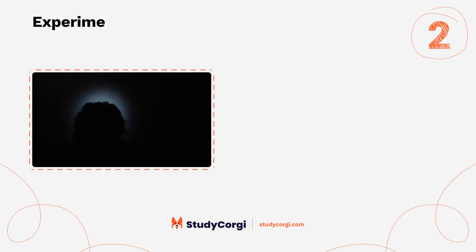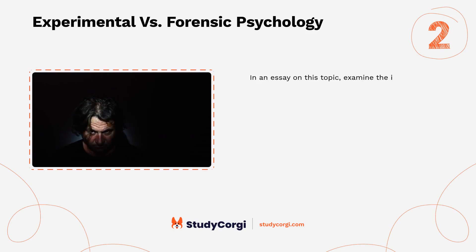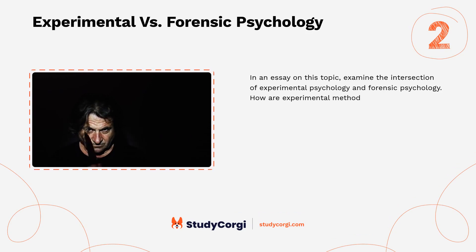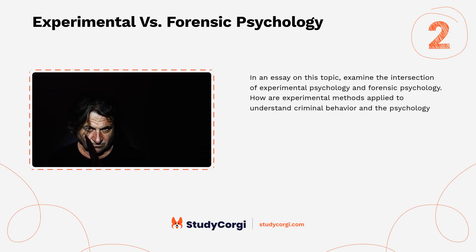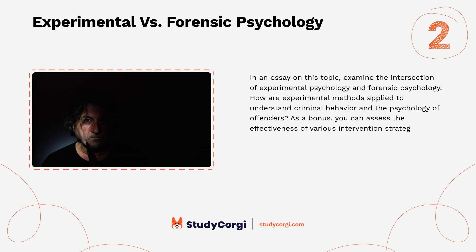Experimental versus forensic psychology: in an essay on this topic, examine the intersection of experimental psychology and forensic psychology — how experimental methods are applied to understand criminal behavior and the psychology of offenders. As a bonus, you can assess the effectiveness of various intervention strategies within the criminal justice system.